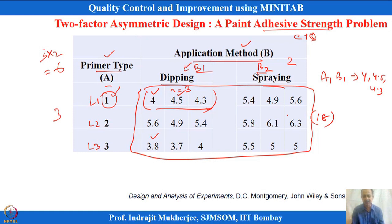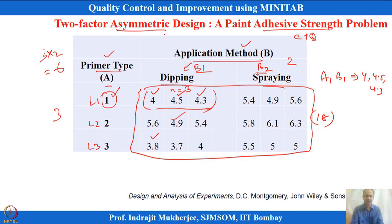Randomization is very important, and replication of 3 was taken. The adhesive strength was measured as the CTQ. This is an asymmetric design because one factor is at 3 levels and the other is at 2 levels. When the levels are equal across all factors, it becomes a symmetric design.